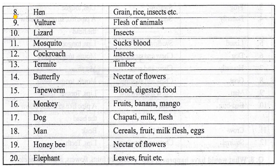Number eight: sparrow — grain, rice, insects — so it is called omnivorous. Number nine: vulture — flesh of animals — that is carnivorous. Number ten: lizard — insects and small animals — carnivorous.